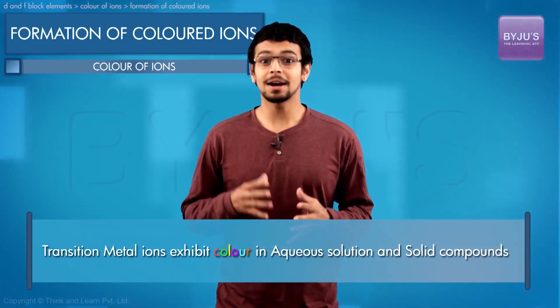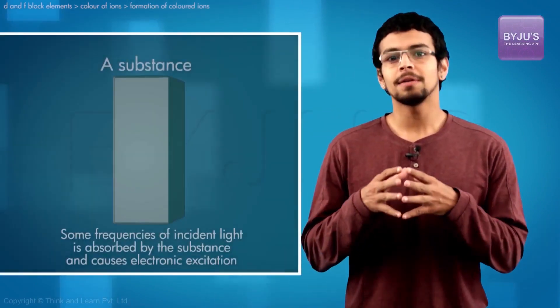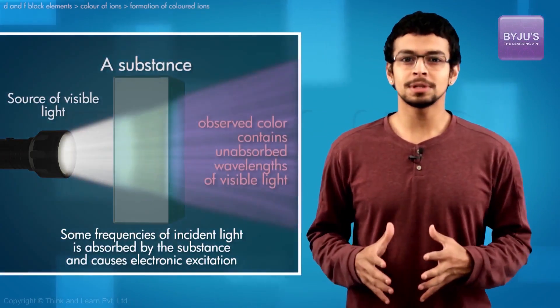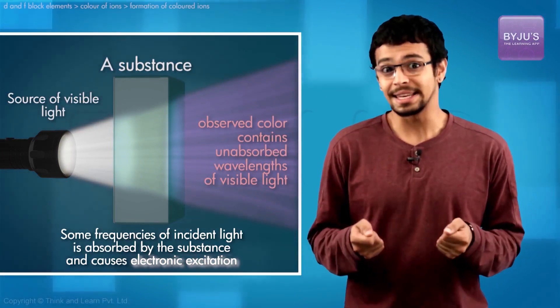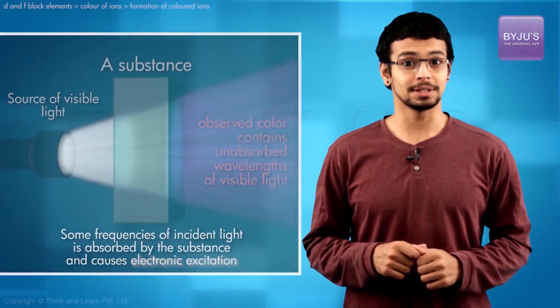Most transition metal compounds are colored in their aqueous solution and in the solid state. When visible light is incident on a substance, electrons within get excited from lower energy d orbitals to the higher energy d orbitals.